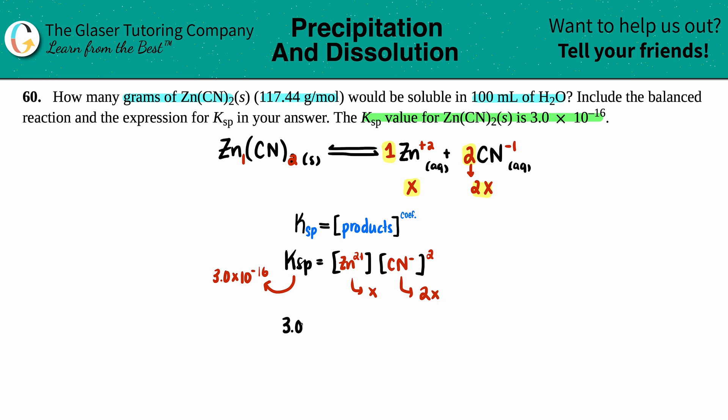3.0 times 10 to the negative 16th equals x times (2x)². Working on (2x)², you have two 2x's being multiplied, so 2 times 2 is 4, and you get x². So (2x)² equals 4x². Pick up another x, and now we have 3.0 times 10 to the negative 16th equals 4x³. Divide both sides by 4.